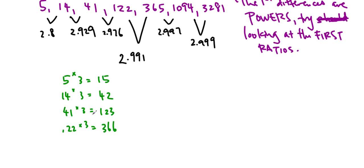And so we can actually see a relationship between the original sequence and the multiples of 3, because we have 5, 14, 41, 122, and here we have 15, 42, 123, 366. So if I just subtract 1, then that's going to give me the sequence I want.